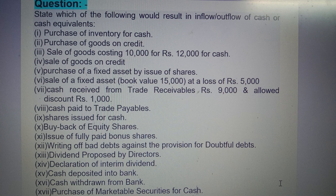Seventh, cash received from trade receivables ₹9,000 and allowed discount of ₹1,000; eighth, cash paid to trade payables; ninth, shares issued for cash; tenth, buyback of equity shares; eleventh, issue of fully paid bonus shares; twelfth, writing off bad debts against the provision for doubtful debts; thirteenth, dividend proposed by directors; fourteenth, declaration of interim dividend; fifteenth, cash deposited into bank; sixteenth, cash withdrawn from bank; seventeenth, purchase of marketable securities for cash.